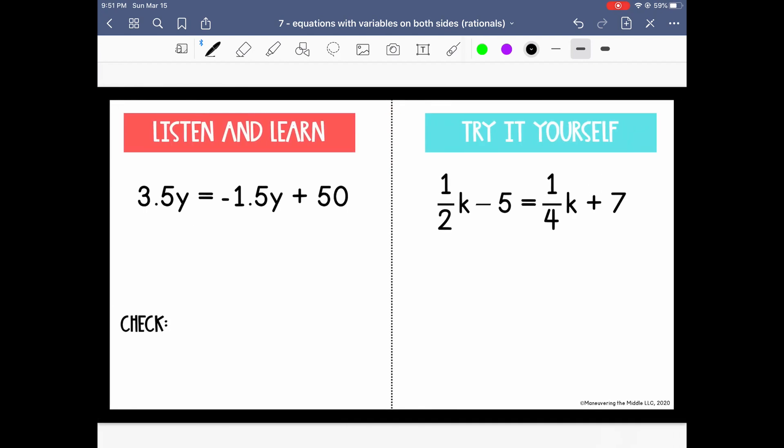So let's work through some examples. In this first equation, I have to decide if I want to collect my variables on the left or the right. So I have 3.5y and -1.5y. I prefer to collect my variables on the side where the coefficient is greater, so I'm going to move them to the left. I want to then cancel out the -1.5y, so I'm going to add 1.5y to both sides.